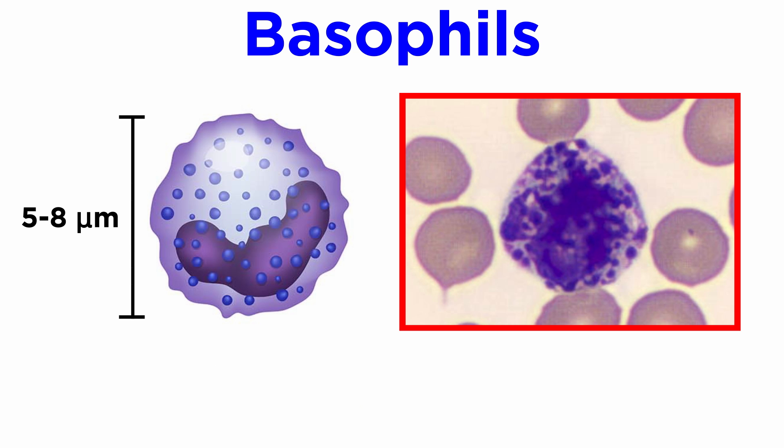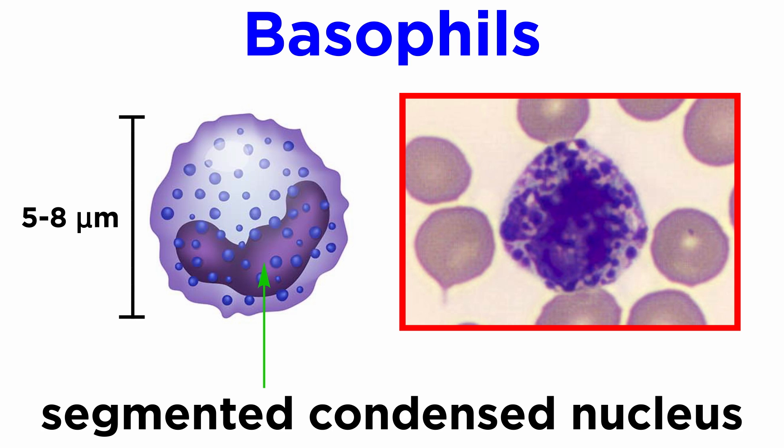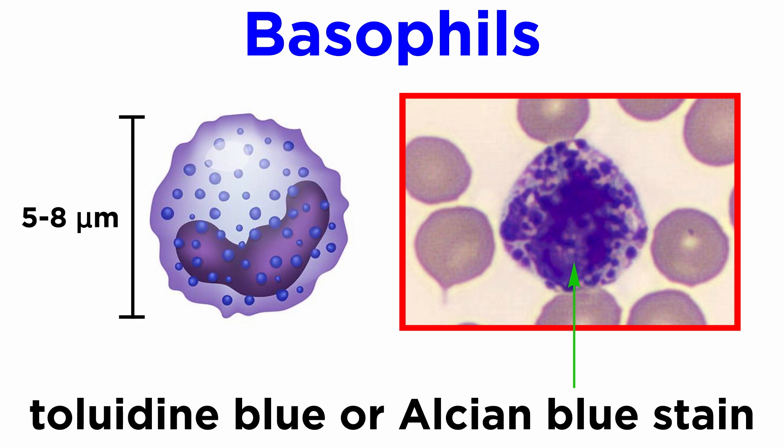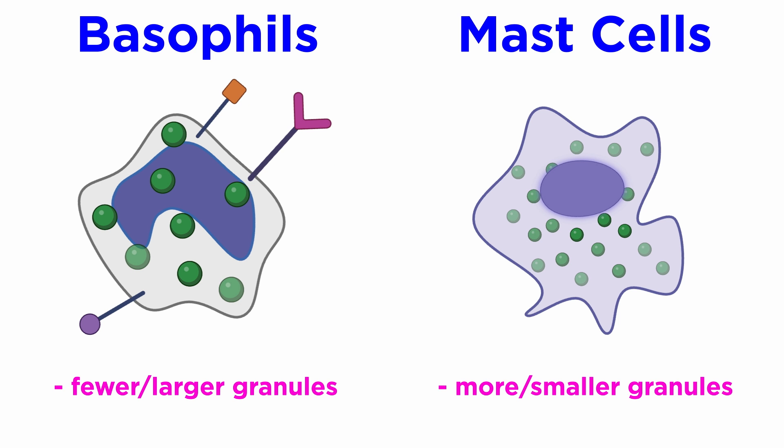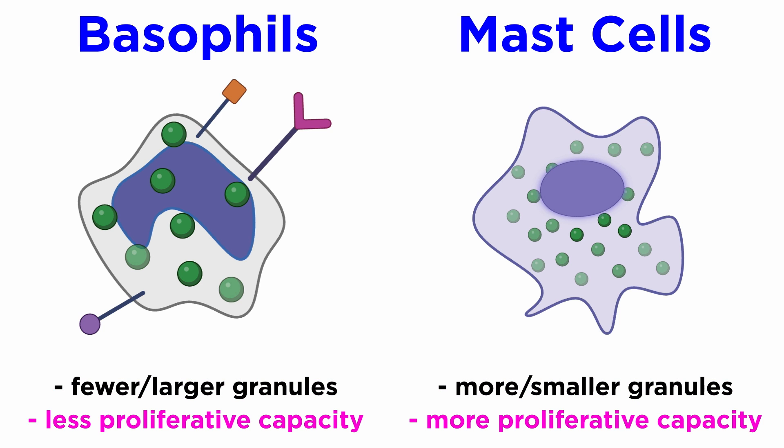Basophils are 5 to 8 micrometers in diameter, exhibit a segmented, condensed nucleus, and are identified with basic stains such as toluidine blue or alcian blue. Basophils have fewer but larger granules as compared to mast cells. Unlike mast cells, basophils have little proliferative capacity.